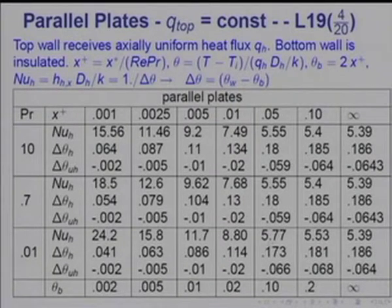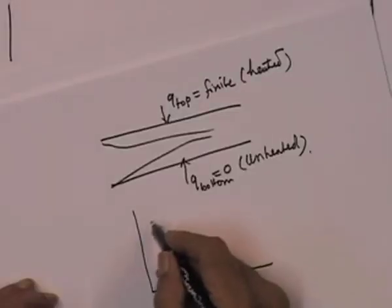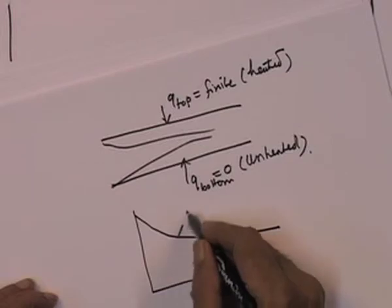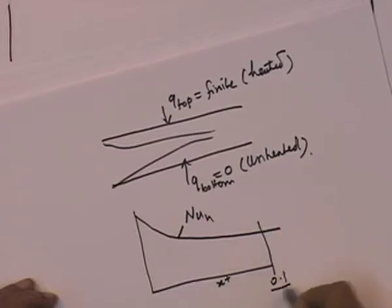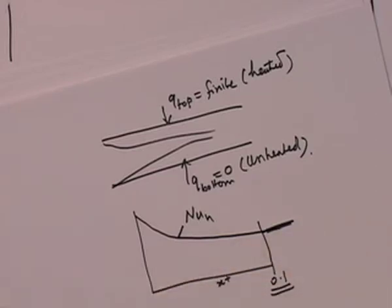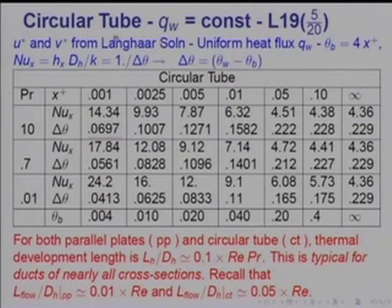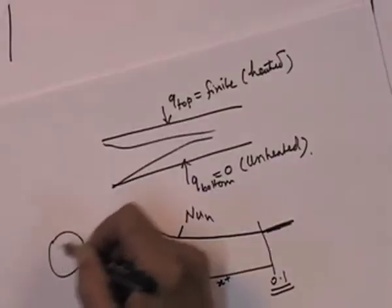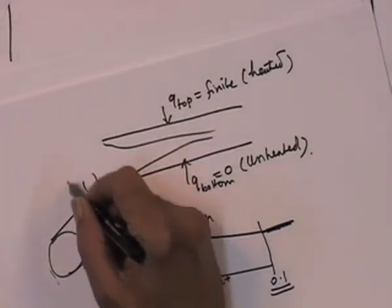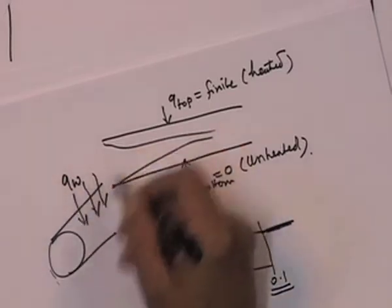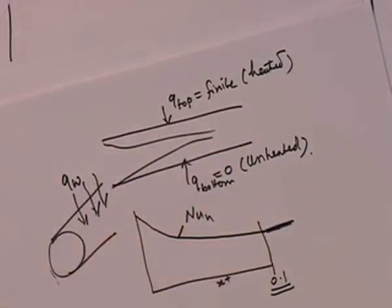It is only on the heated side that the wall temperature exceeds the bulk temperature. So this is how the heat transfer coefficient would vary — on the heated side Nu_h versus x-plus reaches 0.1. We said when Nusselt number becomes constant with x, that is when we say fully developed heat transfer has been achieved. Similarly, the same analysis has now been done for a circular tube, where the cross section is circular and Q_wall is constant axially as well as in the circumferential direction. Let us see what happens when flow and heat transfer develop simultaneously.